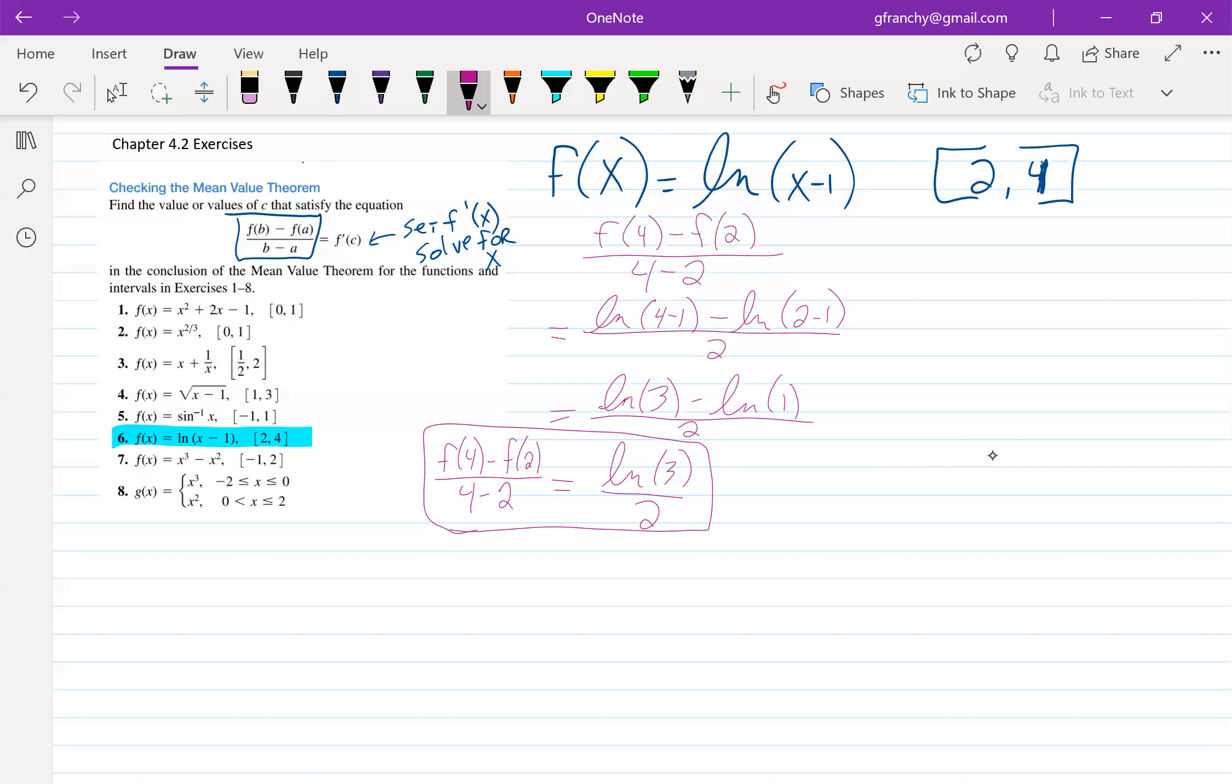The next thing that we need is the derivative of our function. And the derivative of the natural log of x minus one is one over x minus one. And so what we have to do here is set that equal to natural log of three over two.